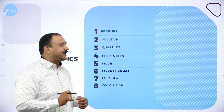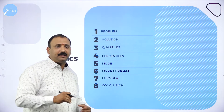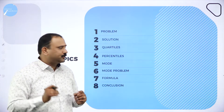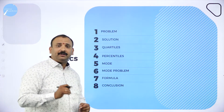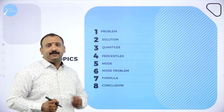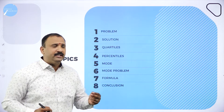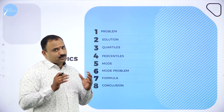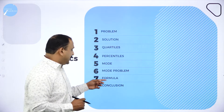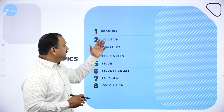We'll cover quartiles and percentiles — a very important concept, though it's a small topic it has got a high weightage. Then we're going to talk about mode, the third part of the measurements of central tendency. We have discussed arithmetic mean and median, and now we are coming to mode, which is going to be very interesting. We have a problem and a formula for it.